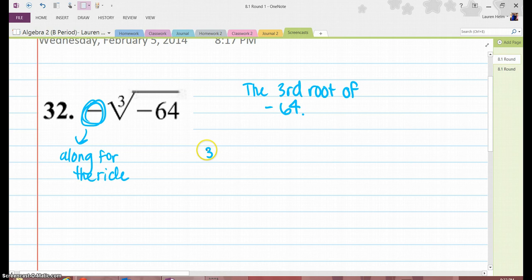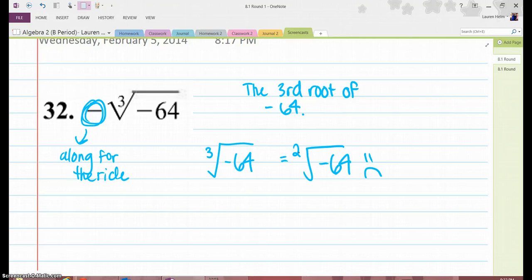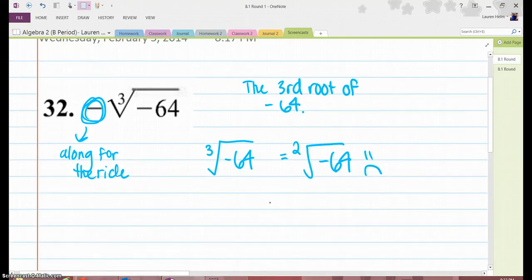You'll have the third root of negative 64. If this was the square root of negative 64, you would not be able to do it because it's an even root with a negative number that's being square rooted.